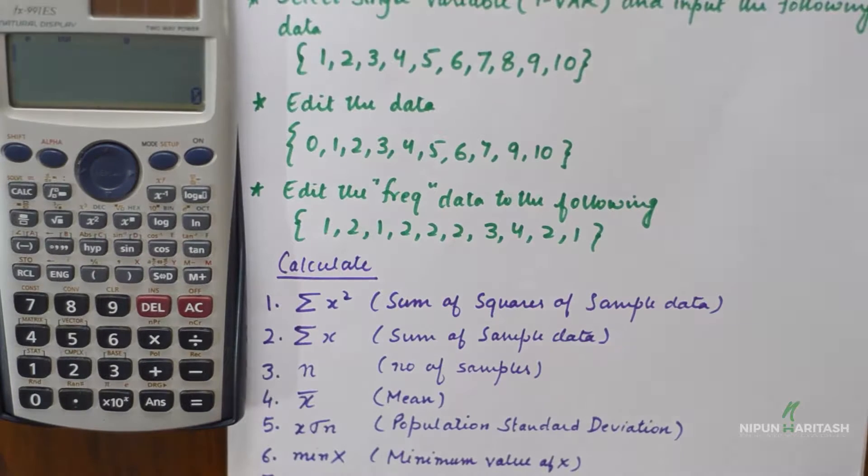If you press 4 you will get all the options to perform various other functions like finding the number of samples, calculating mean, population standard deviation, finding minimum value of X or maximum value of X. This can be done by clearing the screen by pressing AC, then going to Shift Stat, and then you should look out for the option 5 and 6 for variation and min-max options.